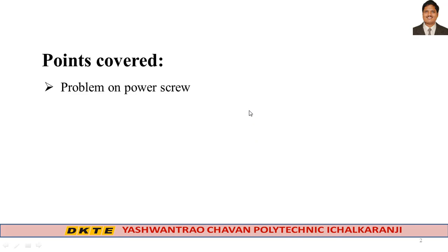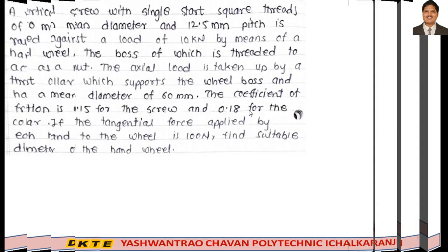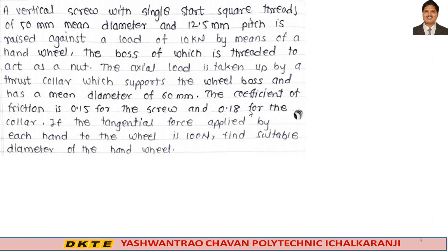Let's start to see the problem. The problem is: given a vertical screw with single sharp square threads of 55 mm mean diameter.